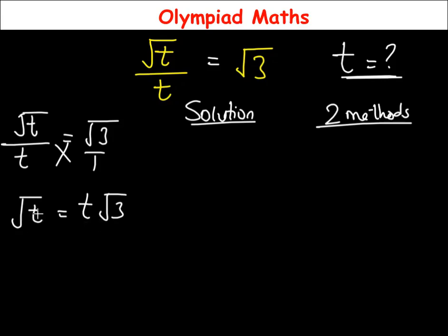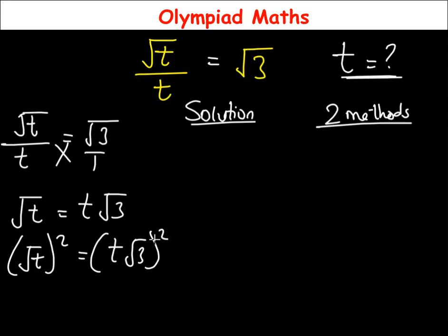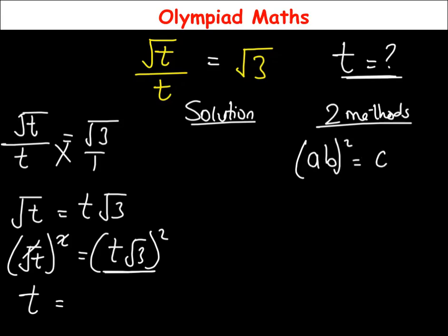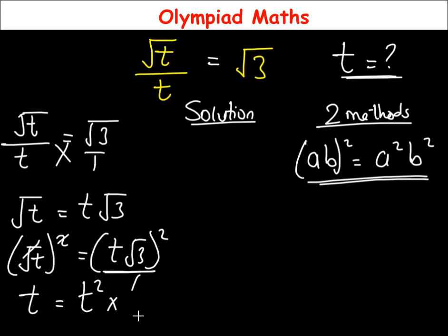To eliminate the square roots, we are going to square both sides of the equation. So we have (√t)² equals (t√3)². The square cancels the square root on the left, giving t. On the right, using the rule (ab)² = a²b², this becomes t² times (√3)².